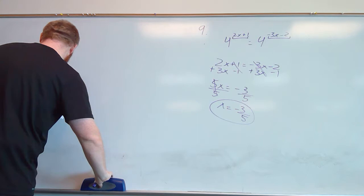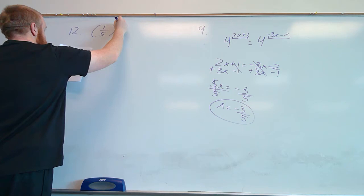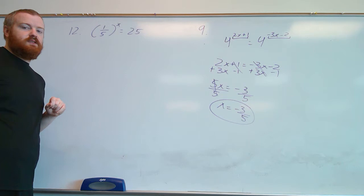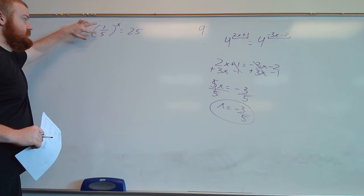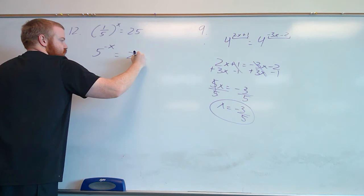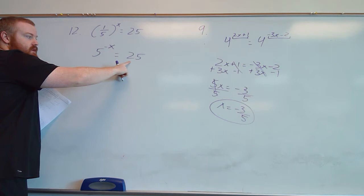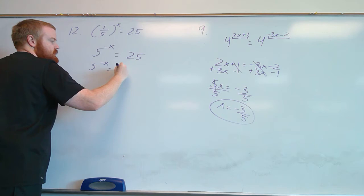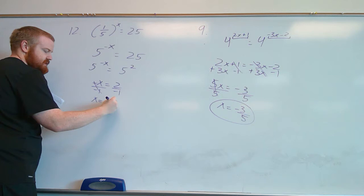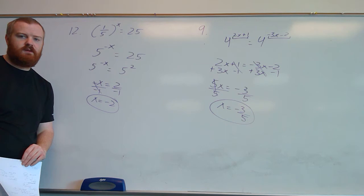For example 12, we have one-fifth to the power of x equals 25. Whenever one of our bases is a fraction, we first get rid of the fraction by taking the reciprocal and making the power negative. Flipping one-fifth gives us 5, and we make the exponent negative x, so we have 5 to the negative x equals 25. We already know 25 equals 5 squared, so setting exponents equal gives us negative x equals 2. Dividing by negative 1, we get x equals negative 2.